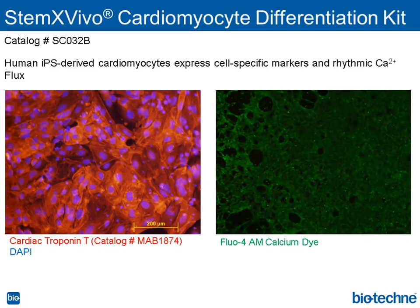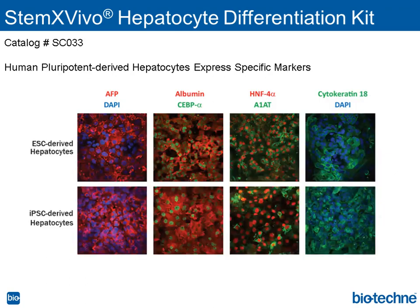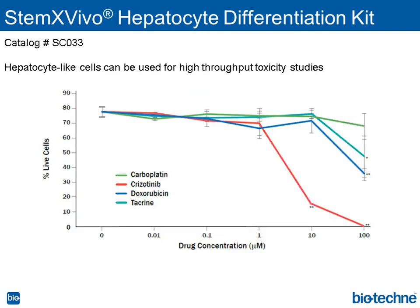The other kit I wanted to highlight is our hepatocyte differentiation kit. This allows differentiation into hepatocyte-like cells with the characteristic stellate morphology, as you can see in the image on the right. We can look at different hepatocyte-specific markers with nice expression in both embryonic stem cell-derived and iPS-derived hepatocyte-like cells. These cells are also useful for toxicity studies, as hepatocytes are a very common cell line used for drug toxicity — we can treat them with known hepatotoxic drugs and generate toxicity curves.